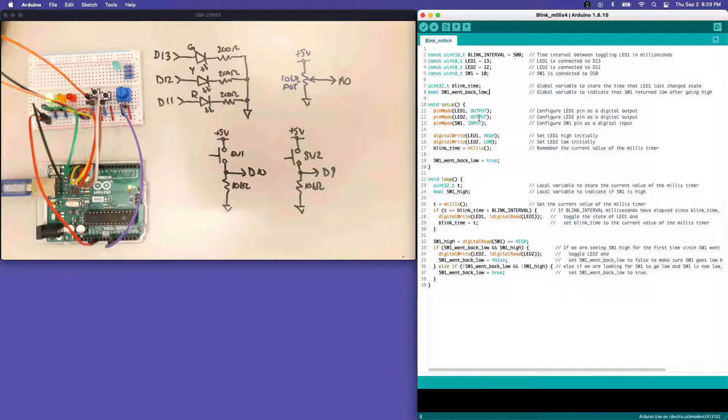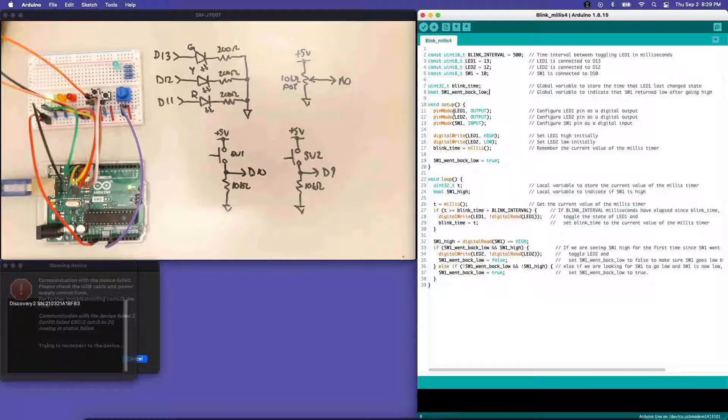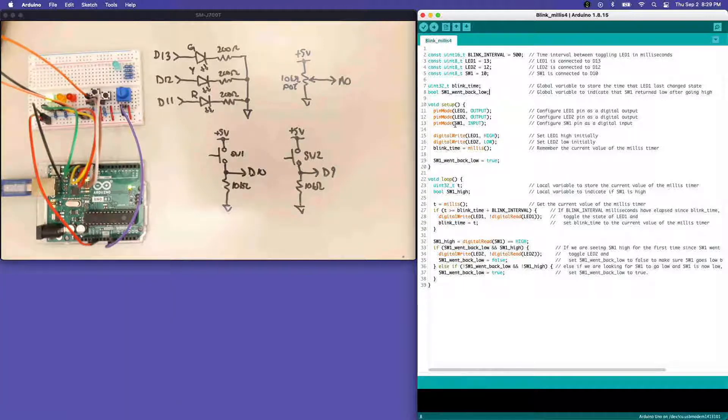We're going to use this global Boolean variable to keep track of that for us. In our initialization, we're doing all the same stuff as before where we set the LED pins to be outputs, and we set the switch pin to be an input, and we initialize LED one high and LED two low. We're going to remember the time that we set LED one high to keep track of the blinking. Then we're going to set switch one went back low to true as an initial value and enter the loop function.